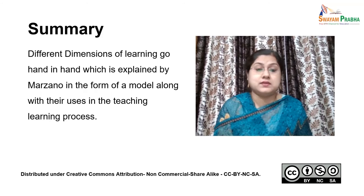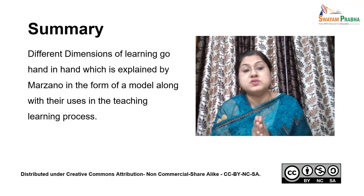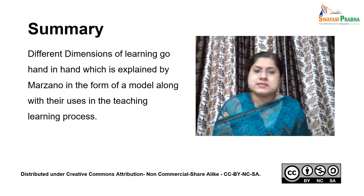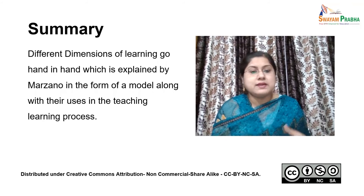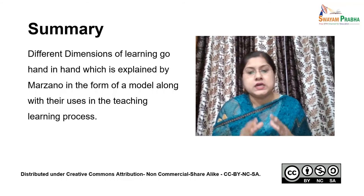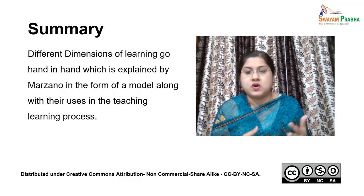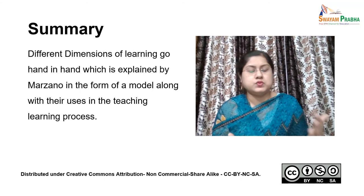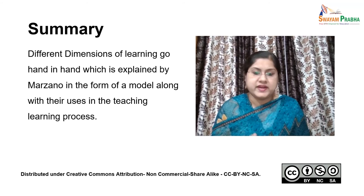With this, we are now at the final part. We will now summarize this particular model. We have seen how the different dimensions of learning go hand in hand, as explained by Marzano in the form of a model, and what are their uses in the teaching-learning process. In the next video, we will discuss Bloom's taxonomy of thinking skills to understand more effectively the whole concept of dimensions of learning, because Bloom has given a different perspective in terms of cognition and thinking. To have another aspect of the dimensions of learning, we will study Bloom's taxonomy of thinking skills in the next part of the session.